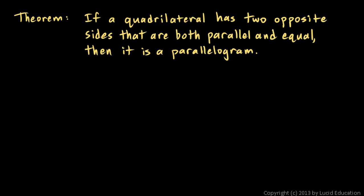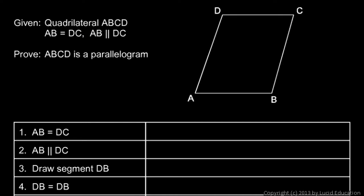One more theorem that we will prove — a theorem involving proof that something is a parallelogram. This theorem says that if a quadrilateral has two opposite sides that are both parallel and equal, then it is a parallelogram. It's easier to see on the diagram. We're going to take two sides and show that if this side and this side are both equal and parallel, then it must be a parallelogram.